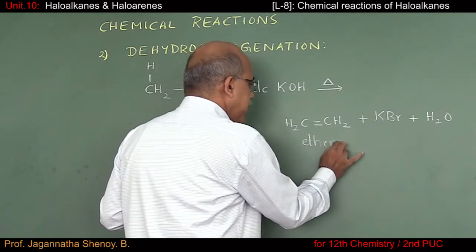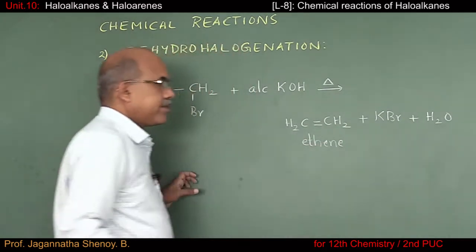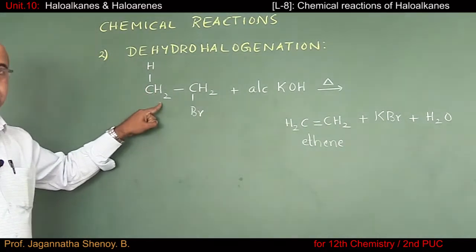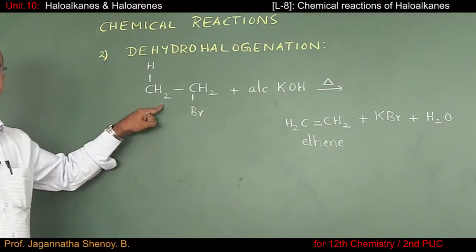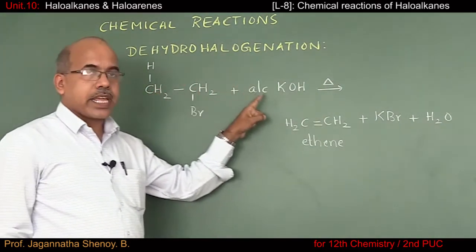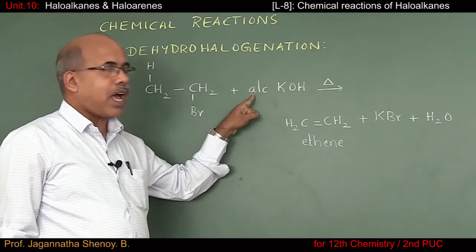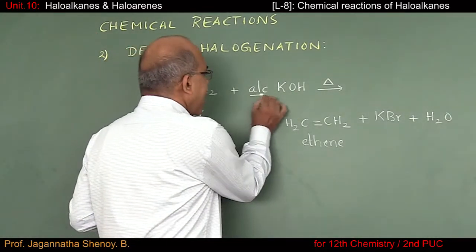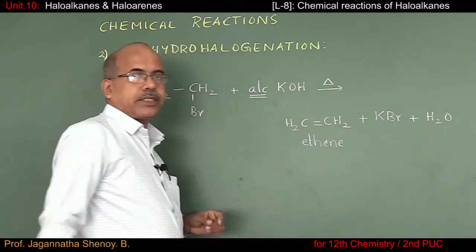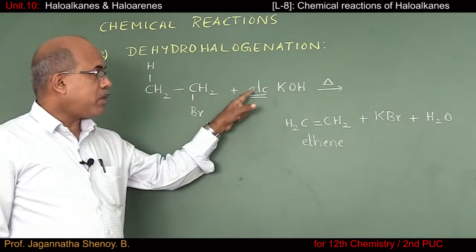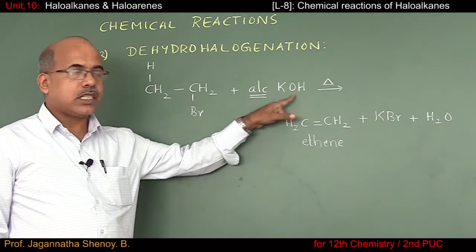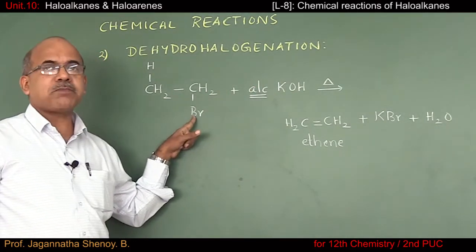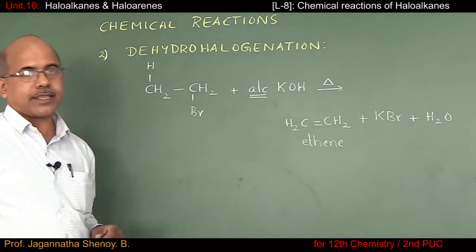The major product obtained is CH2=CH2, which is ethene. To summarize: the substrate should be an alkyl halide; the reagent must be alcoholic potash — this is important, it has to be alcoholic potash. If it happens to be aqueous KOH, a substitution reaction takes place and the Br group will be replaced by an OH group, forming ethanol.